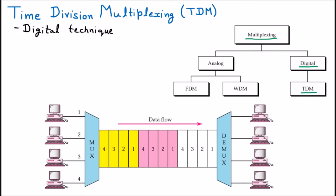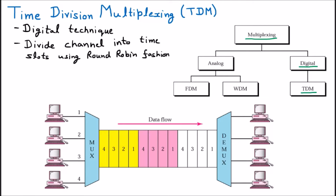Digital technique means it can transmit 0 and 1 data which is binary signals. One important thing is that in TDM, it divides the channel into time slots using round robin fashion. Round robin is a technique by which we can divide.